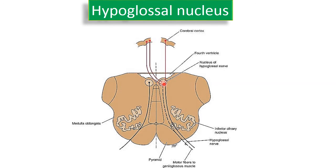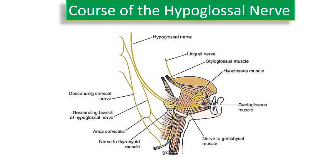The nerve fibres of the hypoglossal nerve traverse through the substance of the medulla oblongata to exit between the pyramids and the olive. The hypoglossal nerve then exits the cranial fossa through the hypoglossal canal.